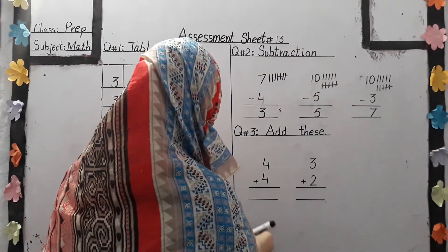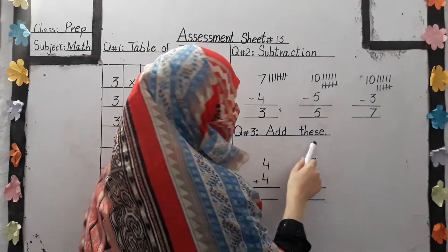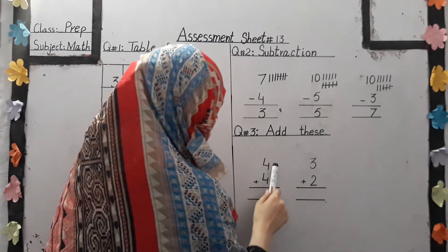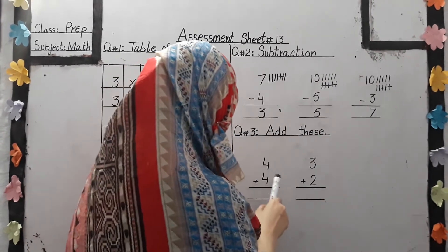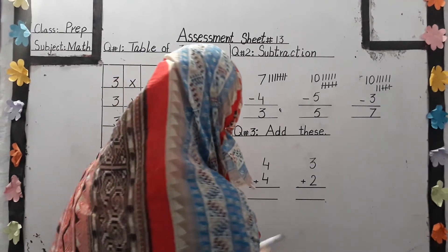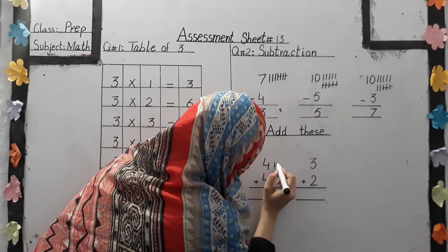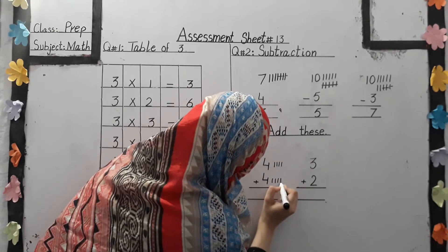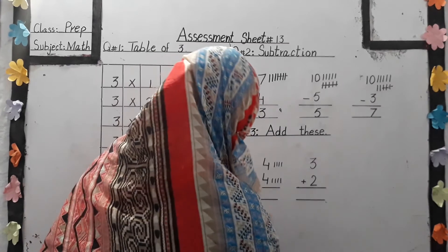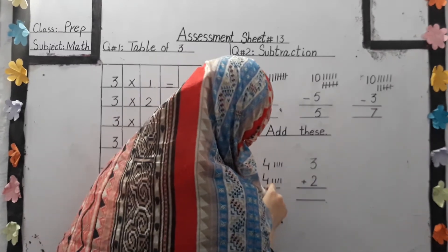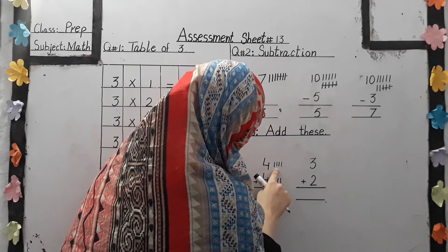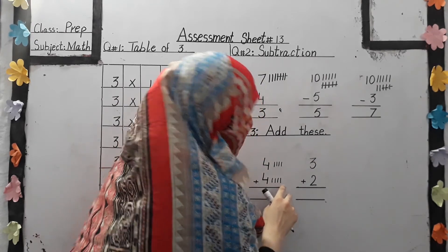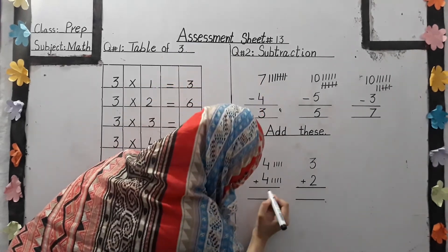Ok, students. Let's move to another question. Question number 3: Add these. 4 plus 4. Let's count both number lines: 1, 2, 3, 4, 5, 6, 7, 8. Ok, we write here 8.